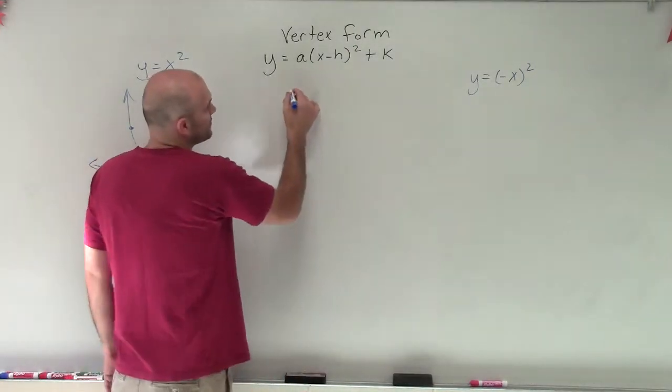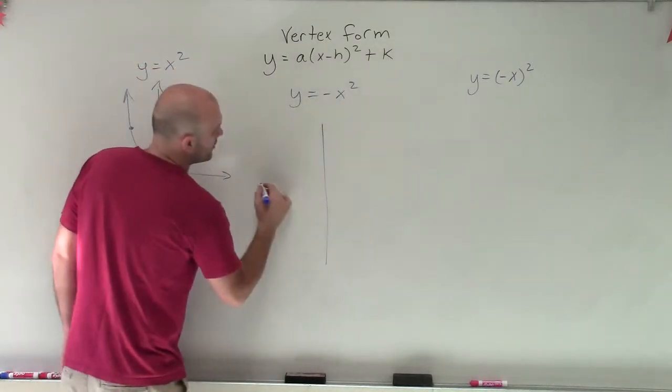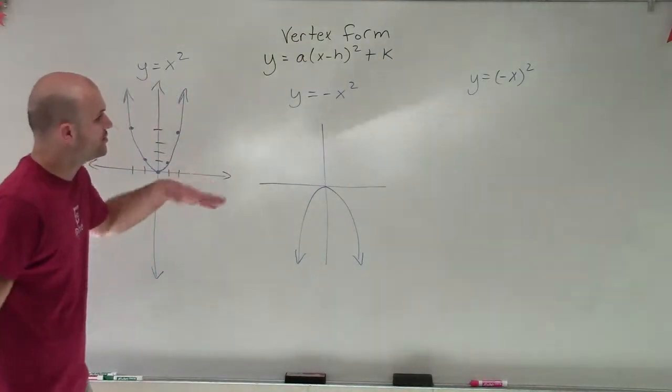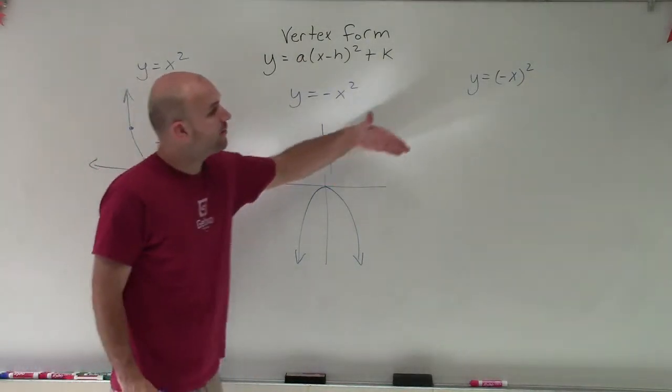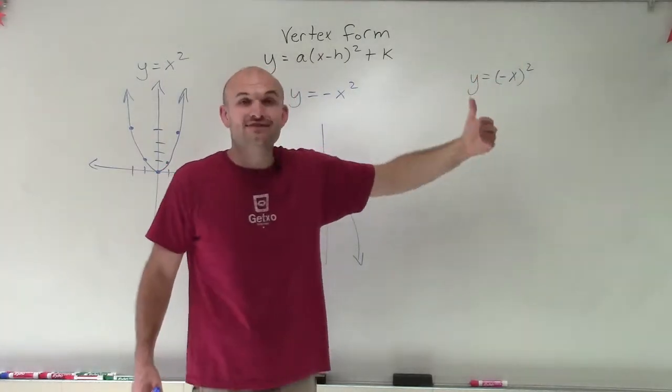Now we've just previously looked at when I have y equals negative x squared, we saw that this graph was reflected over the x-axis. But now what I'm doing is making a negative inside my function, so it's going to be negative x squared.